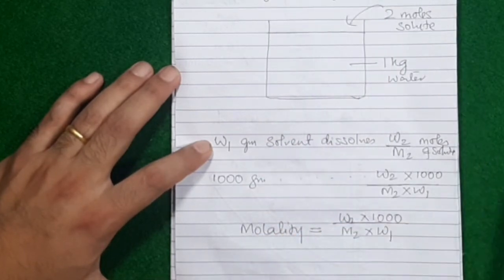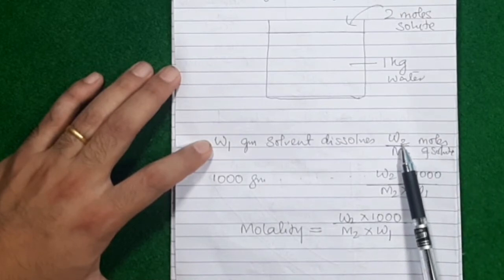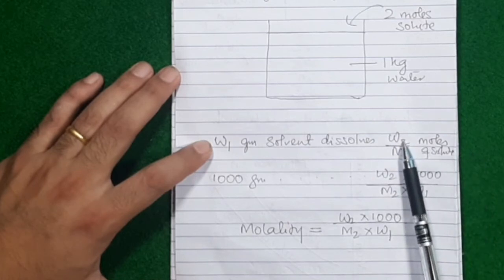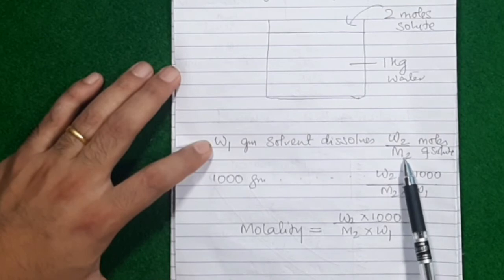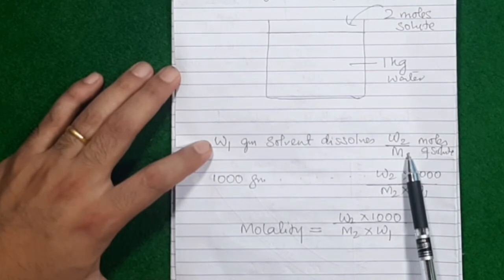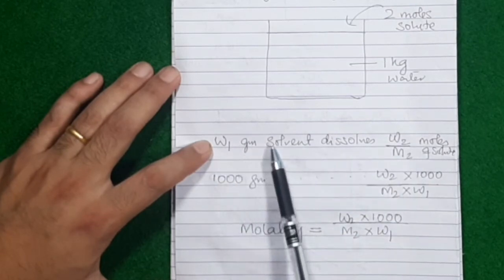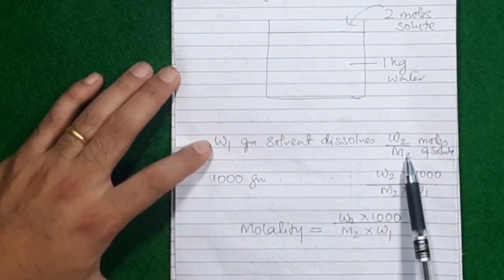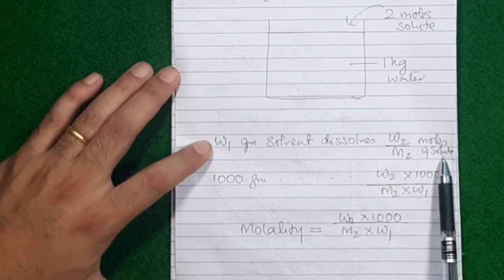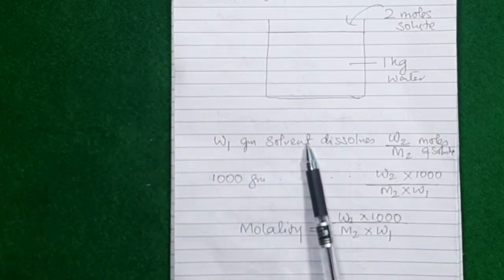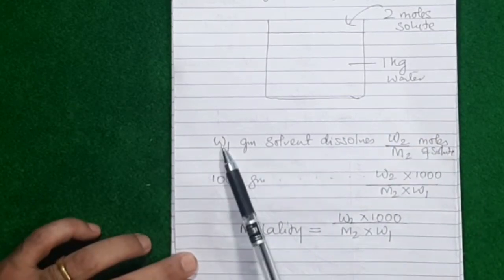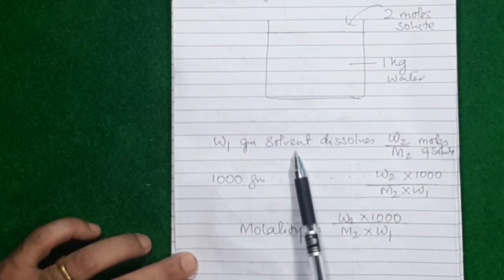The number of grams of solute is not going to give me molality, because molality is not the number of grams — it is the number of moles of solute. If you know the mass of solute written as w2, you can convert that to moles by dividing by molecular mass m2. So mass of solute divided by molecular mass gives number of moles.